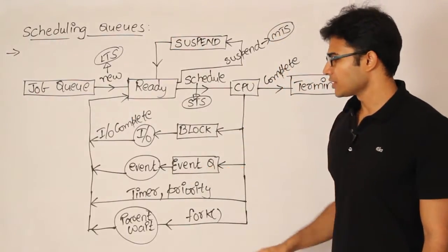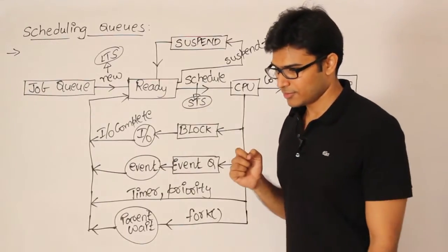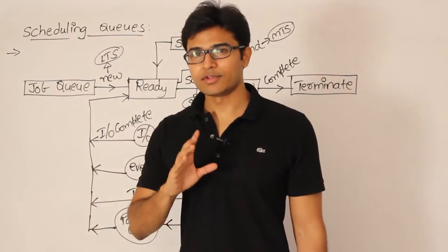Or sometimes it will wait for an event. So what is an event? I will tell you later. There are various events which will block a process. For example, there is semaphore. We shall discuss it later.